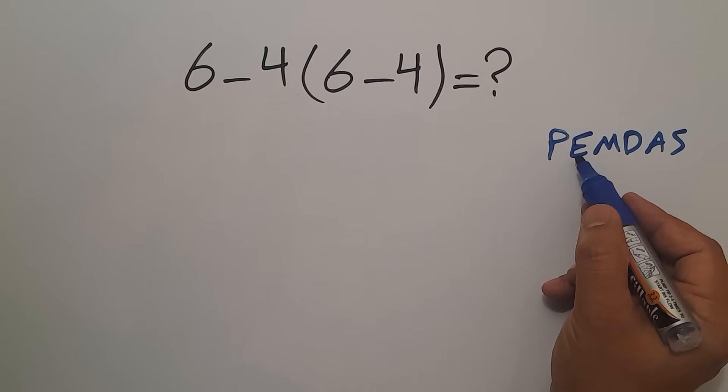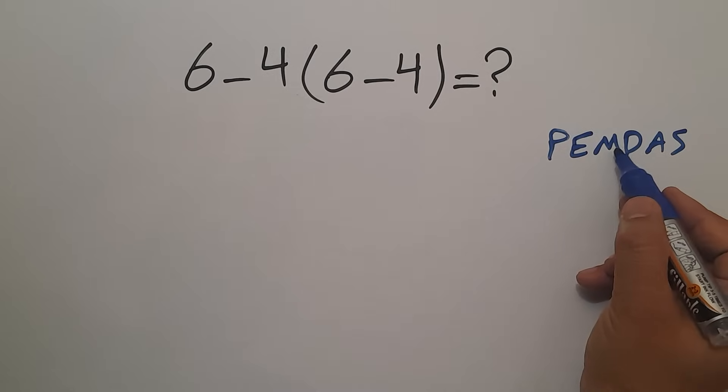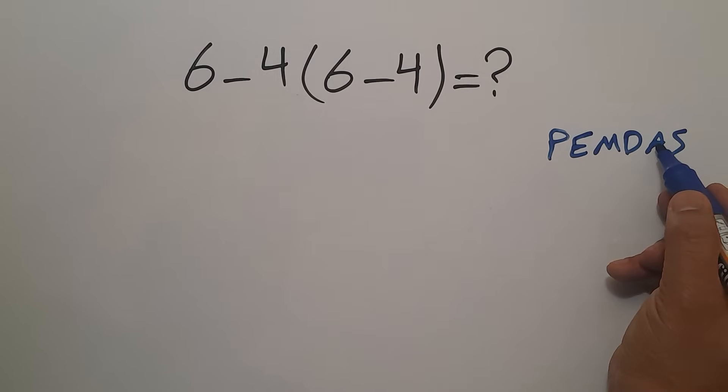E stands for exponents, M and D stands for multiplication and division, and A and S stands for addition and subtraction.